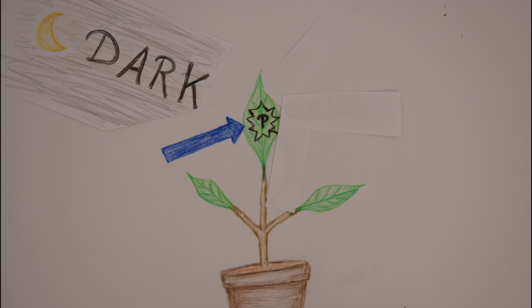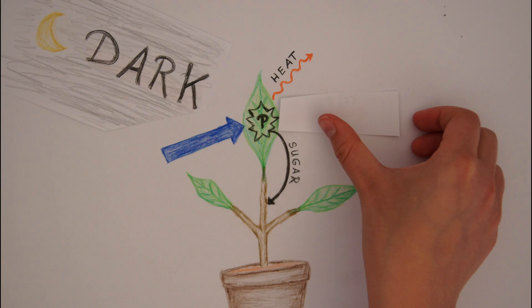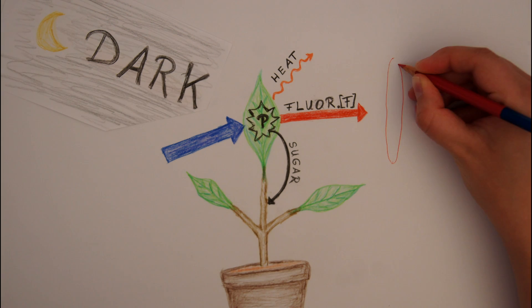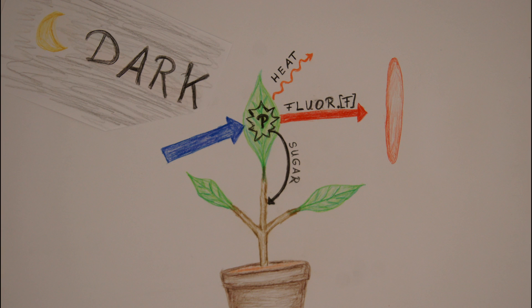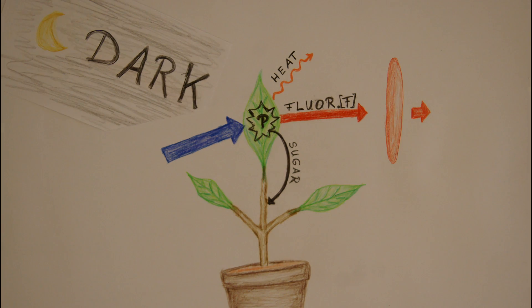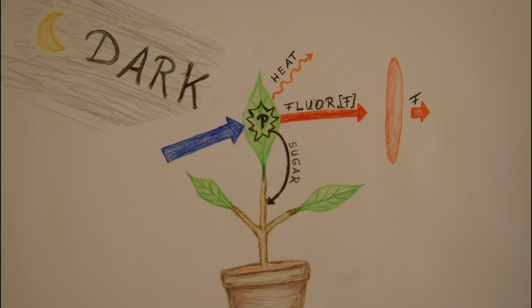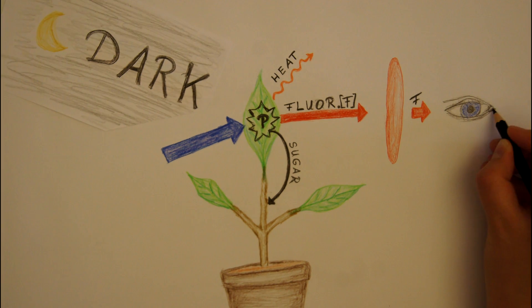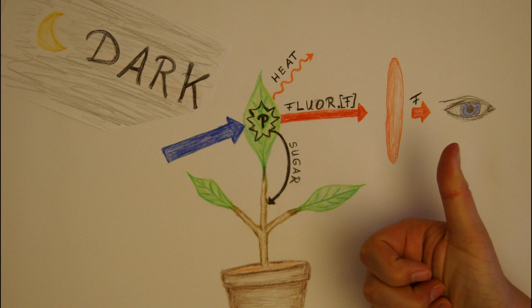This blue light activates photosynthesis again and sugar is produced, a bit of heat and the red fluorescence signal is emitted. To decouple the strong blue light from the fluorescence, a red filter glass is placed between the plant and the observer. This filter allows only red light like the fluorescence to pass, but not the blue activator light. This way we can see the fluorescence signal with the human eye.